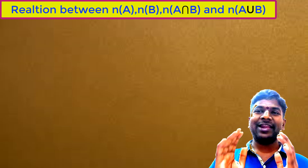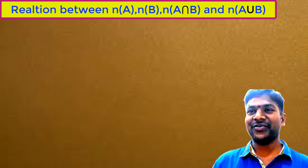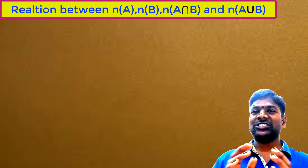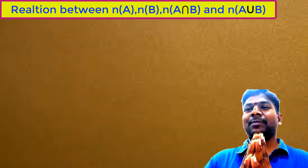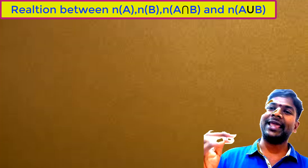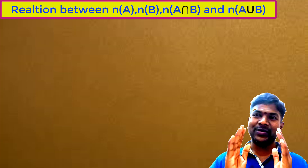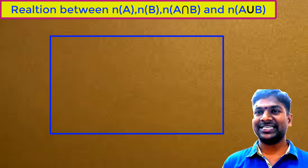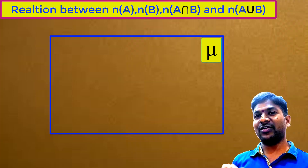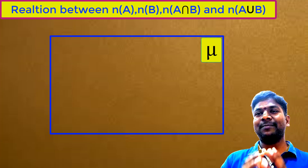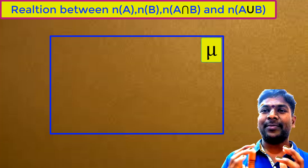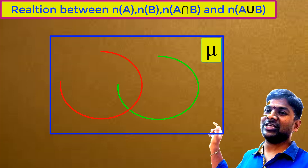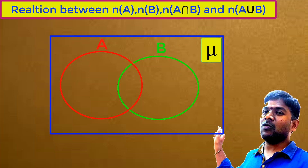Now let us understand an important concept in sets — the relation between N(A), N(B), N(A∩B), and N(A∪B). Let us establish this relation using a Venn diagram. First, we draw a rectangle which represents the universal set, and in the top right corner we write the symbol μ. We take sets A and B, which may have common elements, so we draw two overlapping circles representing set A and set B.